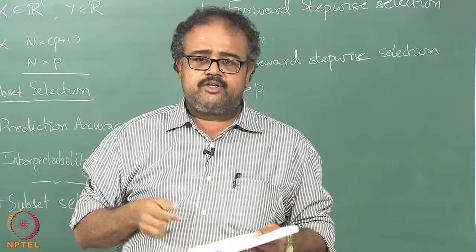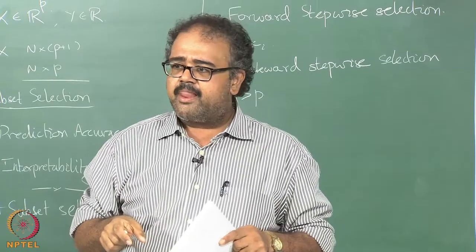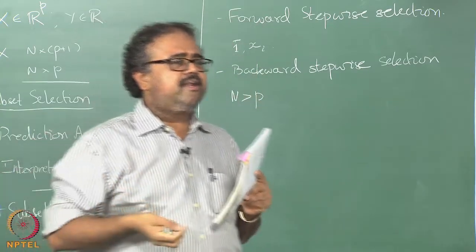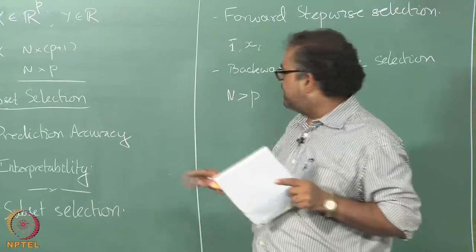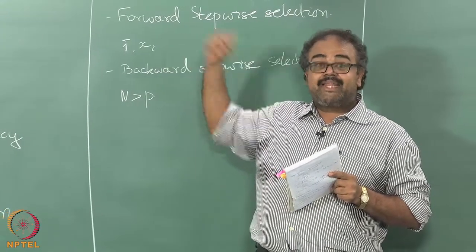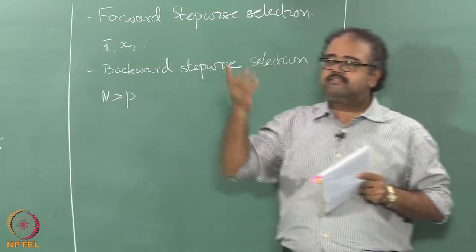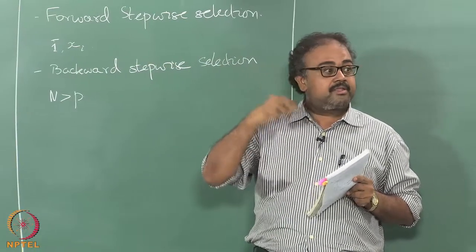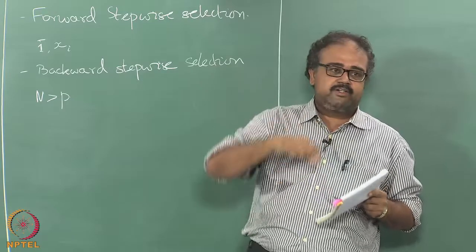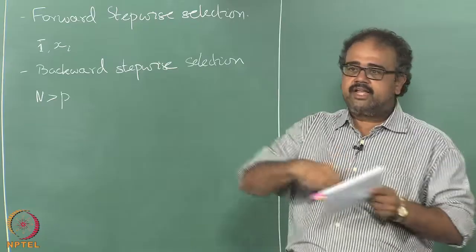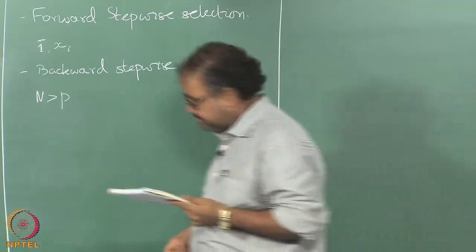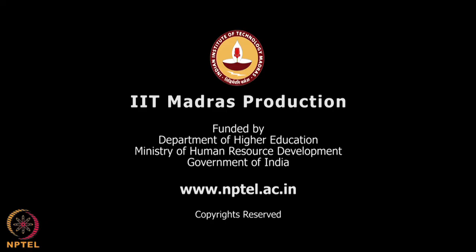One thing I should point out here is you might think that forward stepwise selection, because it is greedy, is going to be much worse than best subset selection. It turns out that in many real cases, many real data sets that you work with, the greedy selection is actually not a bad thing to do. In fact, so much so, many statistics packages like R would allow you to do this. You would not find this in many of the machine learning tools like Weka. They would not have this kind of a forward feature selection things like that. They have other ways of doing feature selection which we will talk about later. But statistical packages actually have this stage-wise addition of features because they seem to work well on a variety of data sets.